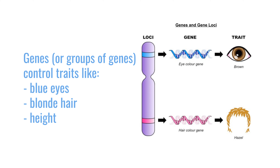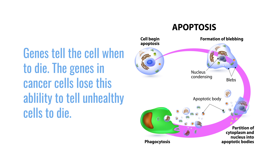Genes encode information that controls some part of the function of the cell. Ultimately, genes or groups of genes control traits such as blue eyes, blonde hair, and height. In cancer cells, we are particularly concerned about genes that make life or death decisions, because cancer cells are cells that have lost the ability to make wise decisions about life and death. Every cell has a normal life cycle — it's important to know when to divide and when to die. When cancer cells lose this ability, they become a burden; they exceed their normal lifespan and hang on, resulting in more cells than there should be, which can set the stage for cancer.